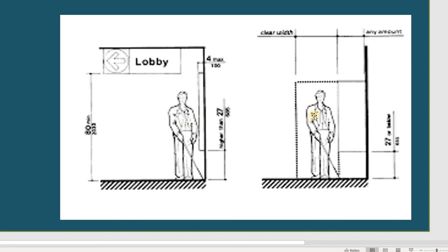In lobbies or corridors, blind people cannot read signs, so they use special canes that detect walls and objects by sound or vibration. As a designer, you need to know that any overhead obstruction must be at a maximum of 80 inches from the floor — measure from the floor up to the underside of any overhang — to ensure people do not hit their heads, especially blind individuals walking through.